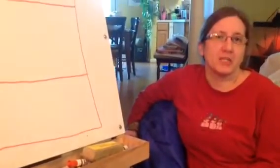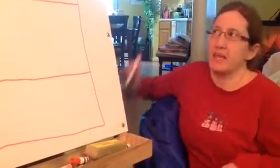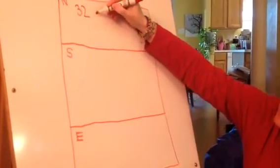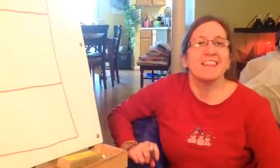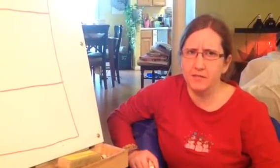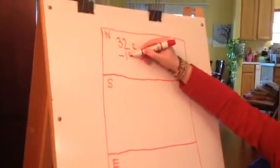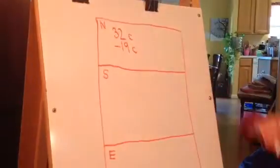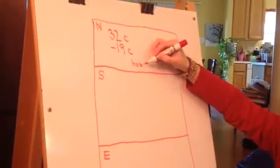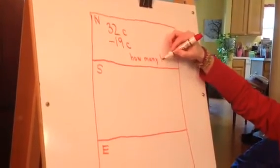Ms. Drass had 32 cupcakes. I'm not writing 'Ms. Drass had' — I'm just going to write 32 C for cupcakes. And then the Dynamos ate 19 of them. If they ate them, did we add or did we subtract? We subtracted. So 19 cupcakes got subtracted, and we want to know how many are left.